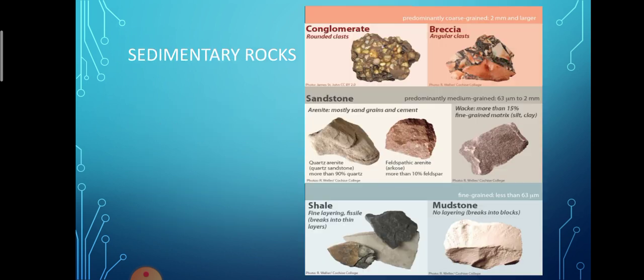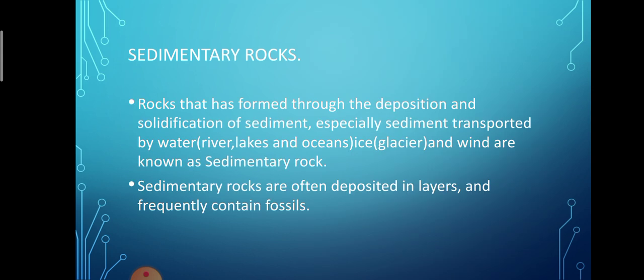The next type of rock is sedimentary rocks. Rocks that have formed through the deposition and solidification of sediments, especially sediments transported by water and wind, are known as sedimentary rocks. They are often deposited in layers and frequently contain fossils. Rock fragments are carried by running water, wind, and moving ice and deposited in depressions under water. Over a period of time, these sediments are continuously accumulated in layers, compressed and hardened with cementing materials such as lime to form sedimentary rocks.